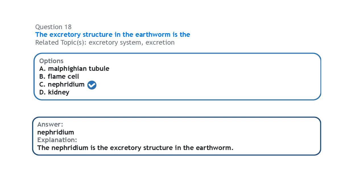Next on the excretory system: the excretory structure in the earthworm is the nephridium. The Malpighian tubule is the excretory structure in insects. The flame cell is found in flatworms, while the kidney is found in animals like humans.